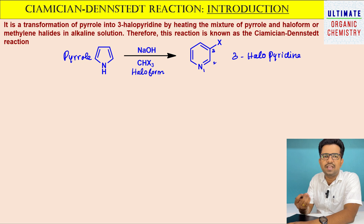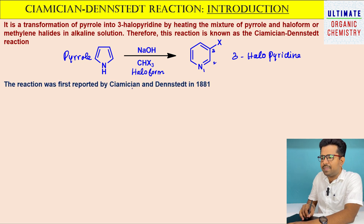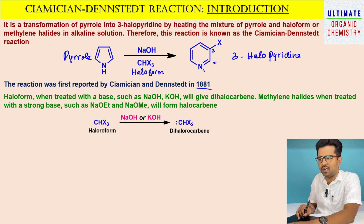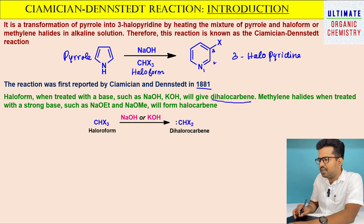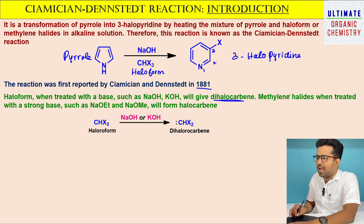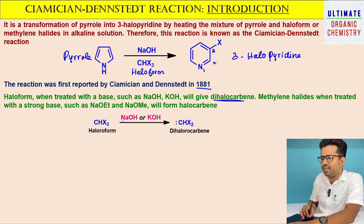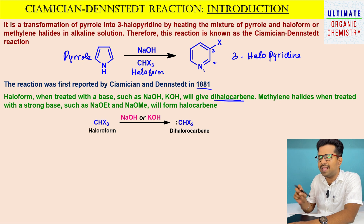Let us discuss this reaction in detail. This reaction was reported by Ciamician and Dennstedt in 1881, in which haloform is treated with a base such as sodium hydroxide or potassium hydroxide to give dihalocarbene. In the case of methylene halide, when treated with a strong base such as sodium ethoxide, it will form monohalocarbene. When haloform is treated with sodium hydroxide or potassium hydroxide, it leads to the formation of dihalocarbene.